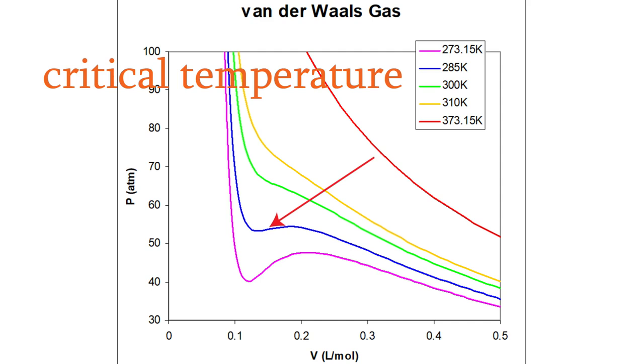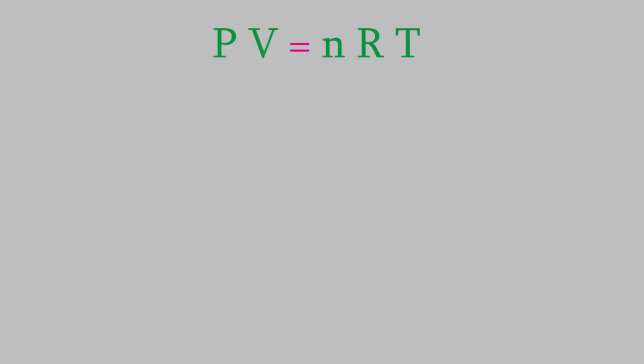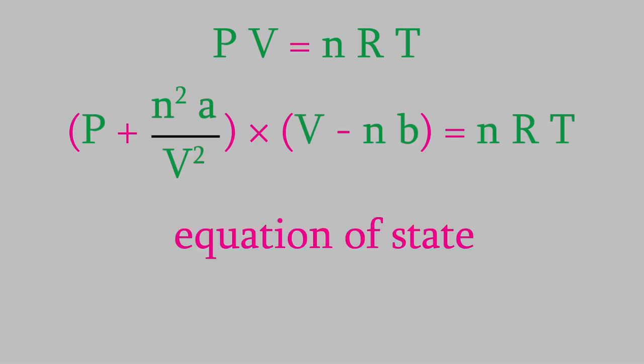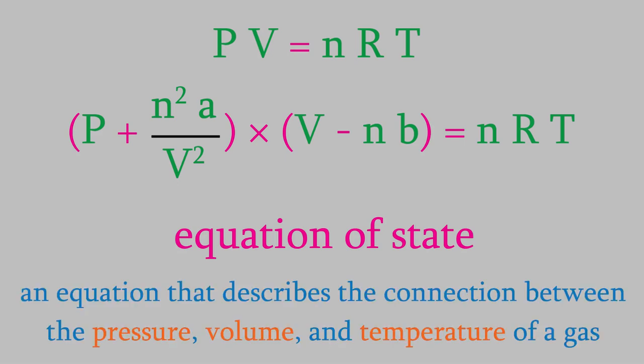So far, we've seen two equations that describe the behavior of gases. The ideal gas law and the van der Waals equation. These are both called equations of state. That's just a term for an equation that models the connection between the pressure, volume, and temperature of a gas. As we just saw a minute ago, both of these equations are really just approximations, so we have to be careful about when we use them. But there is an equation of state that can give us exact results, at least in principle.